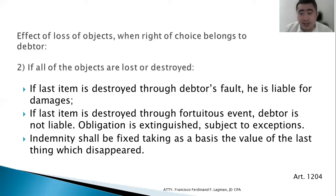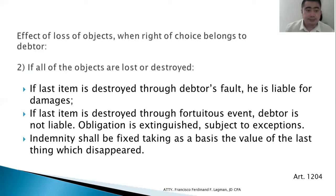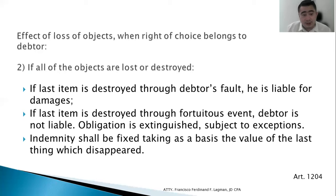Let's clarify: with five prestations, if the debtor destroys four and one remains, he is not liable. If that last item is then destroyed by a fortuitous event, the debtor is still not liable because the last item was lost without his fault. You will always look at the last item. If the last item is destroyed through fortuitous event, the obligation is extinguished subject to exceptions. Indemnity shall be fixed taking as a basis the value of the last thing which disappeared.